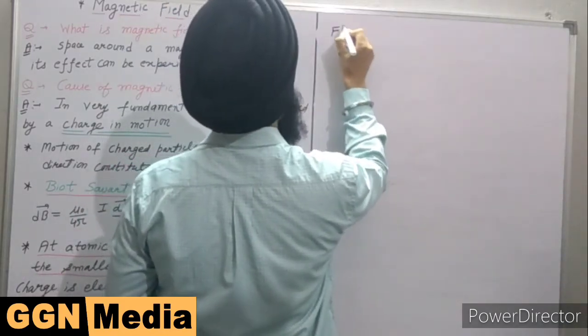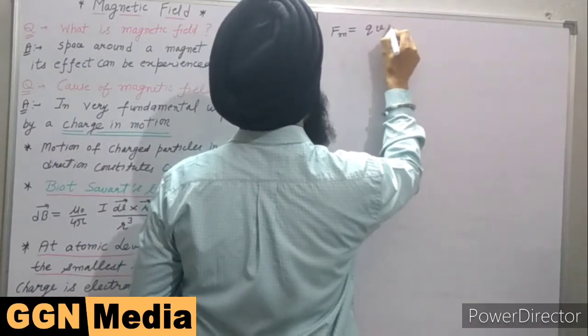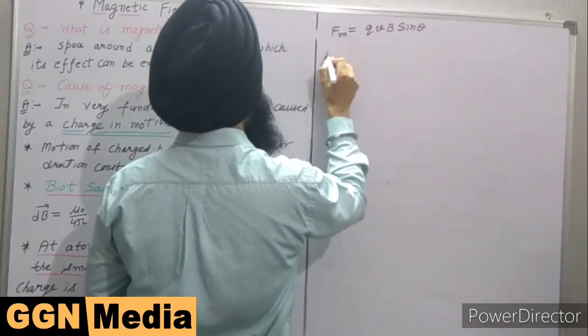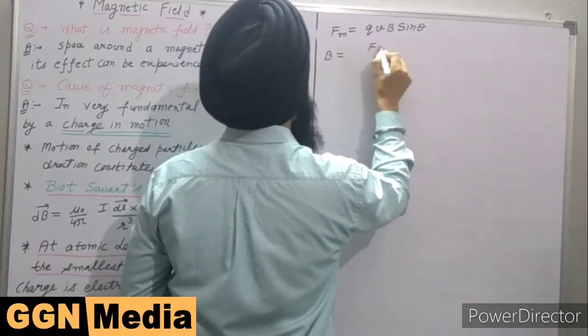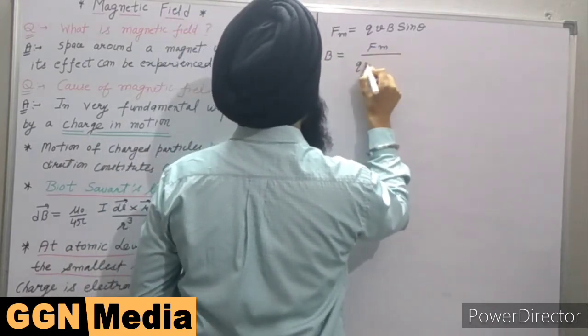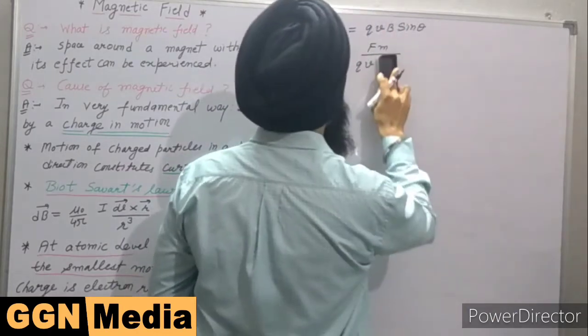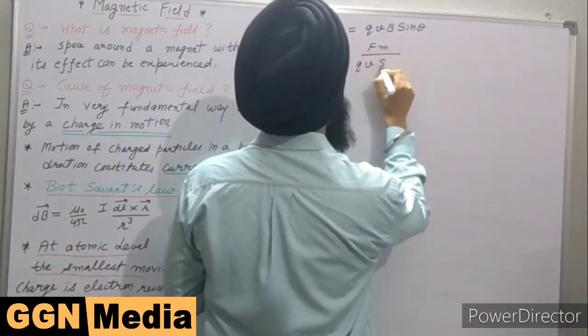Here we have the magnitude form of magnetic force. So if I keep B on one side and take other quantities on the other side, we can write like this: B equals Fm divided by qv sin theta.